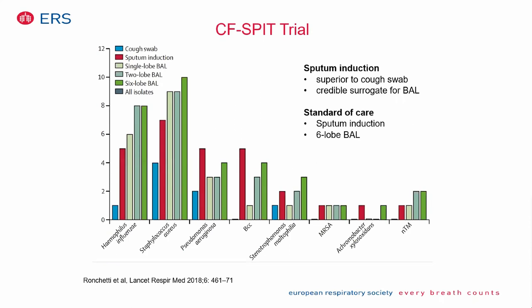Bronchoalveolar lavage gives the best microbiological yield but is invasive, so it is reserved for specific indications. Sputum induction is a very good tool with a better yield than a cough swab. When performing a lavage, try to sample all lobes to maximize the yield of bacteria found.